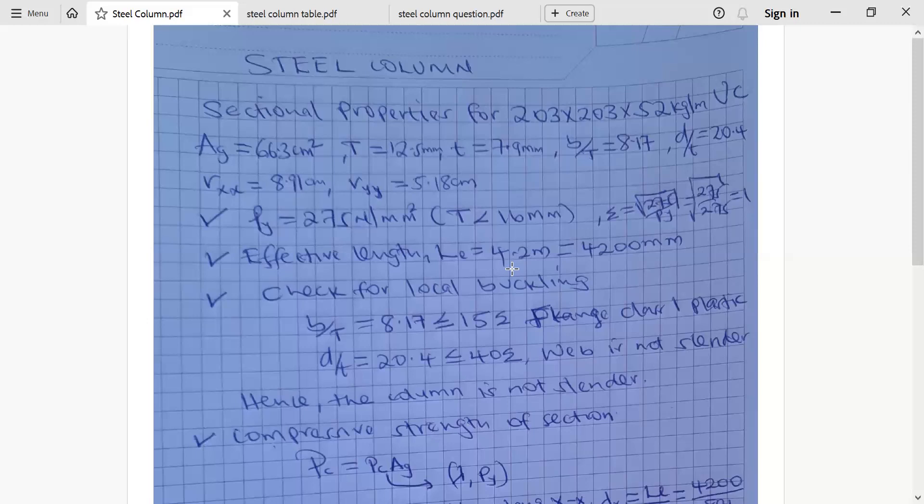Our D over T was 20.4 and the limiting is 40 epsilon naught. This means our web is not slender. If our web is not slender, we conclude and say our column is not slender. The reason why we have to categorize and take this ratio is because each category comes with its formula for compressive strength.